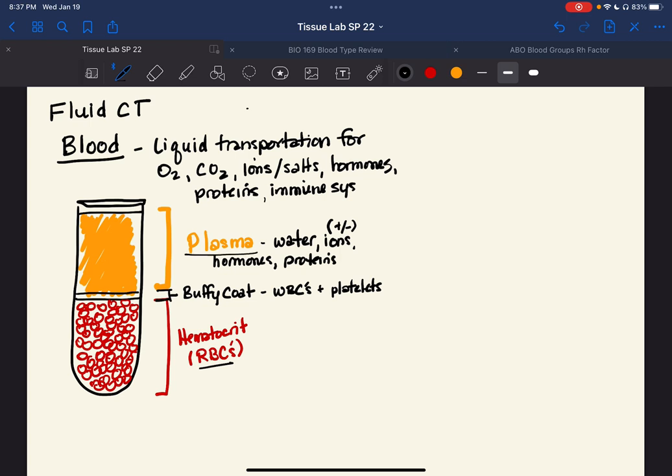And then the cells, now don't forget the buffy coat. And the buffy coat is kind of part of the plasma. So white blood cells, platelets, and plasma are all together. And then the hematocrit are the cells themselves, the red blood cells. These are the cells in this connective tissue. Let's draw one very simply.